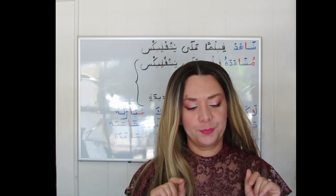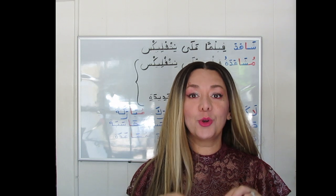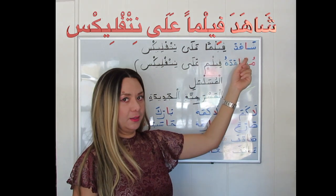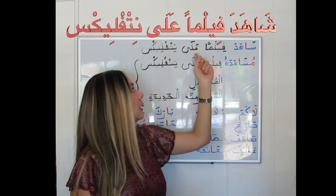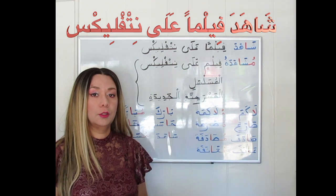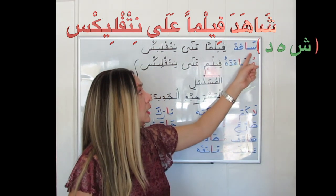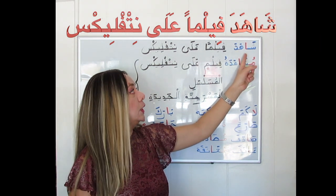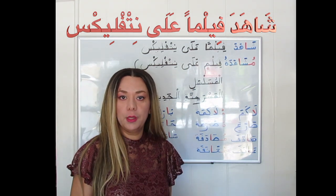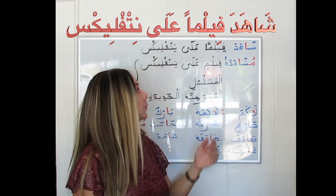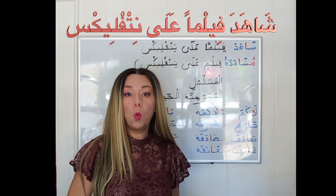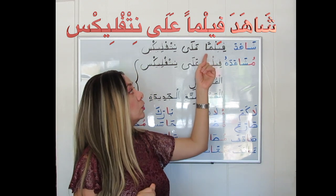So, back to our example. The verb شَاهَدَ — فَاعَلَ — to watch. The root is ش-ه-د, and we introduce the alif after the first radical to have Form 3: فَاعَلَ. فِيلْمَن is the object of the verb شَاهَدَ — he watched a movie — in the accusative with double فتحة because it's indefinite.